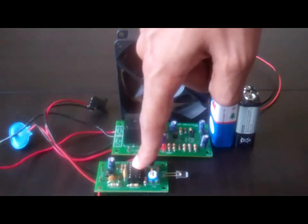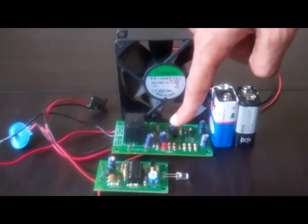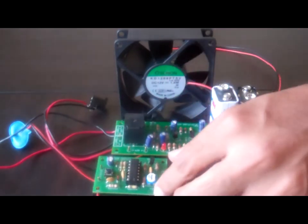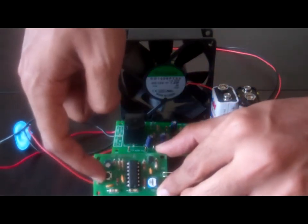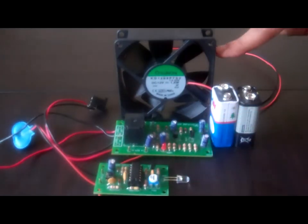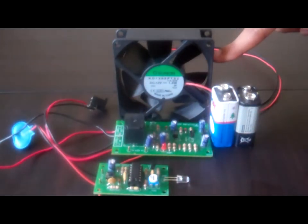This is the transmitter board. This is the receiver board. This is the remote control switch. And this is the appliance to be remotely controlled.